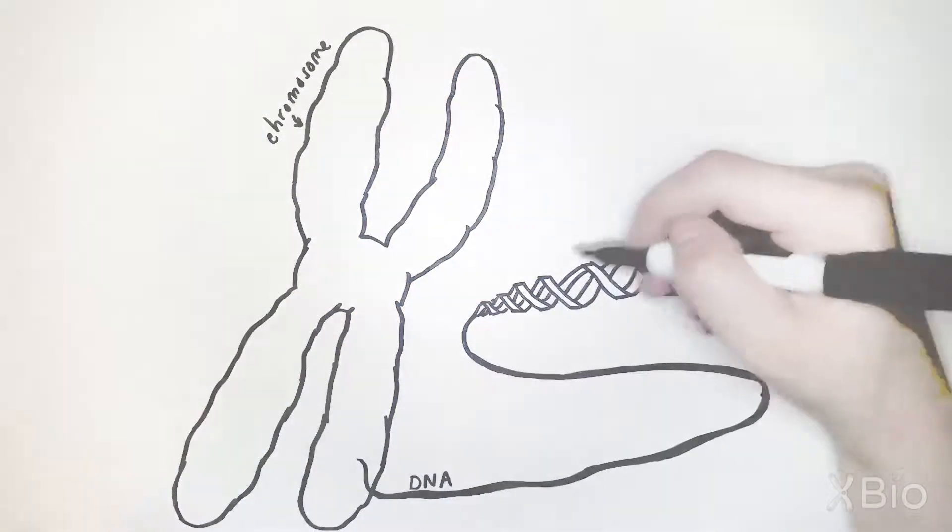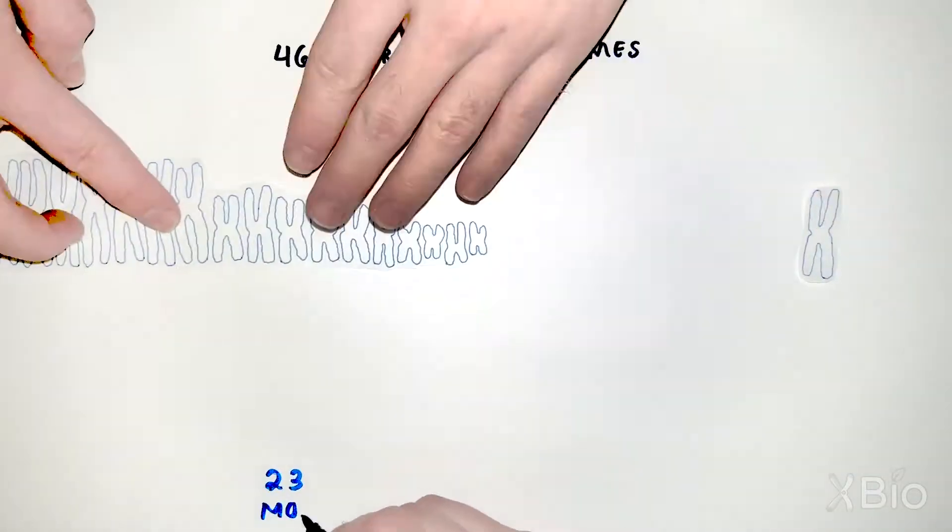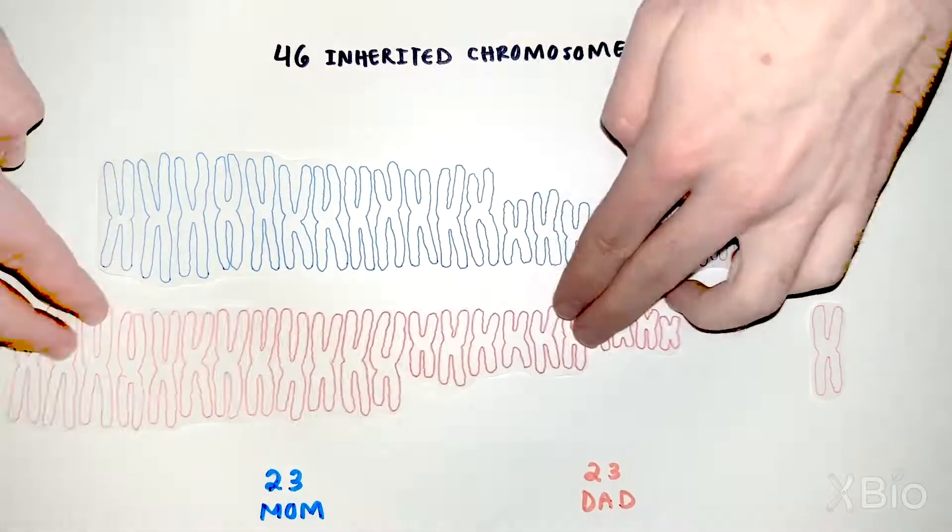Your cells have 46 chromosomes, and they come in pairs. 23 that you inherited from your biological mother, and a matching pair of 23 chromosomes from your biological father.